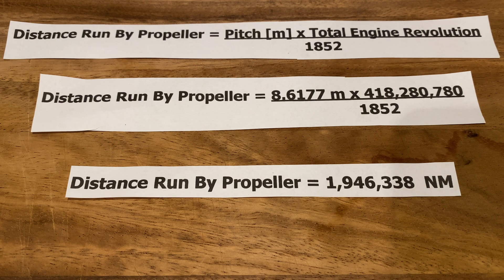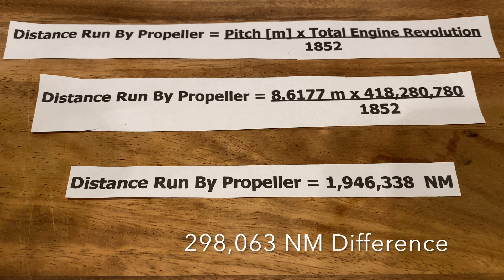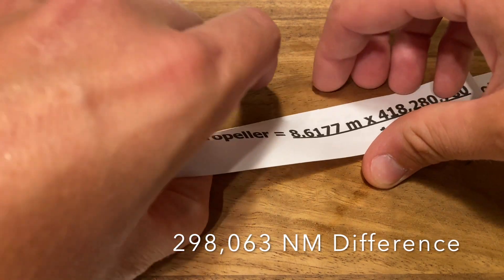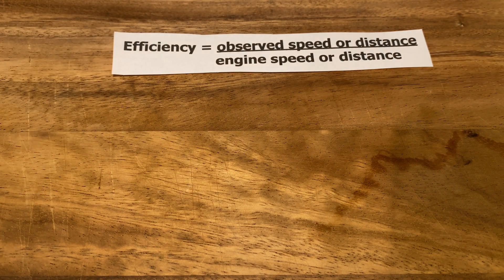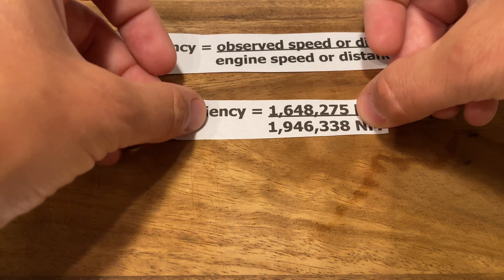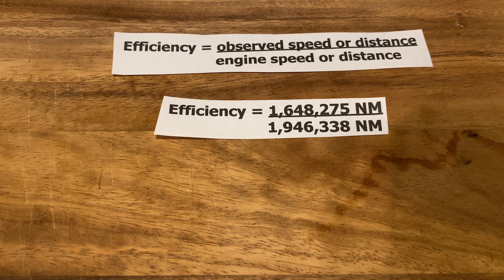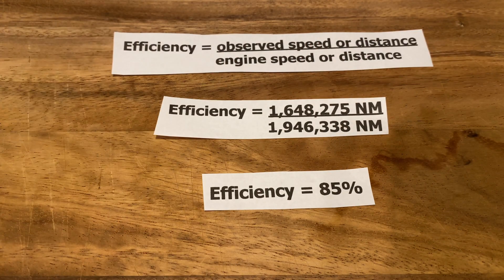However, as we saw on the GPS log, the ship has actually traveled 1,648,275 nautical miles, which is 298,063 miles less. To measure the efficiency, we look at this formula: efficiency is equal to the observed speed or distance divided by the engine speed or distance. 1,648,275 divided by 1,946,338 equals an efficiency of 85%.